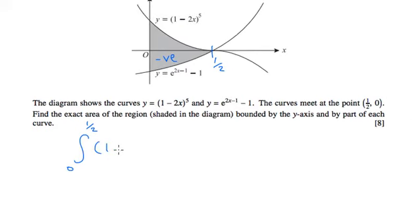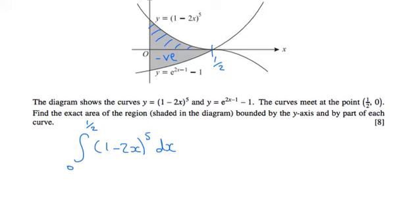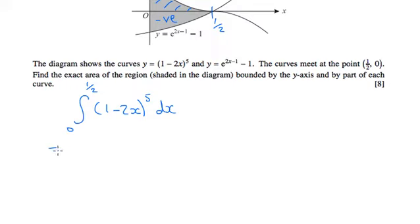So that's going to be the integration of (1 - 2x) to the power of 5. I'm going to work out that one first, which will get us the top area here. So to find that one, we need to add one to the power, so it's like the reverse chain rule. Add one to the power, divide by the new power.